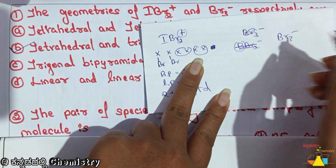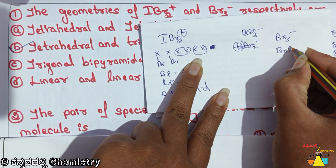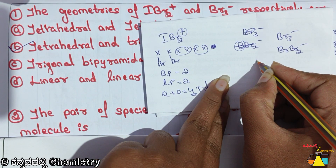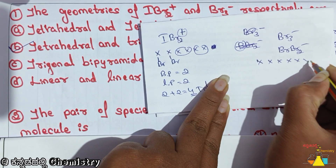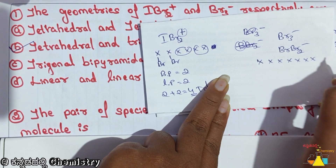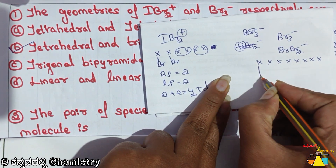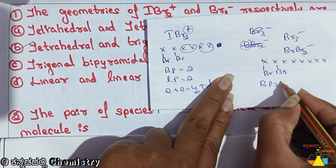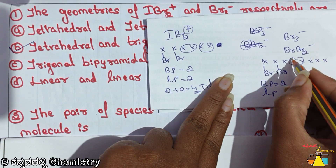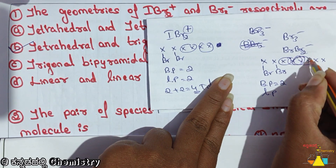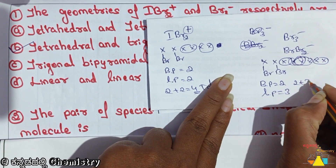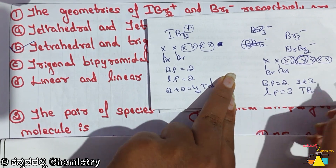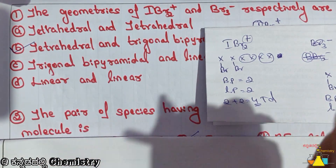Next, Br3 minus. So Br2 minus — bromine outermost electrons: 1, 2, 3, 4, 5, 6, 7. But 1 minus, so 1 electron is added. That is 1 electron. Total bond pairs is equal to 2, lone pairs is equal to 1, 2, 3. So 2 plus 3.